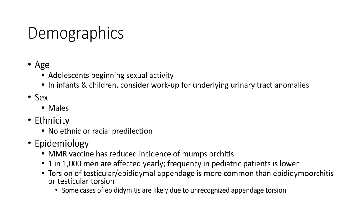Epidemiology: The mumps vaccine has reduced the incidence of mumps orchitis. Approximately 1 in 1,000 men are affected yearly. Frequency in pediatric patients is lower. Torsion of the testicular appendix is more common than epididymal orchitis or testicular torsion. Some cases of epididymitis are likely due to unrecognized appendix torsion.